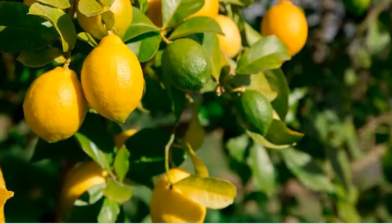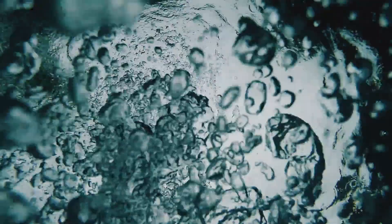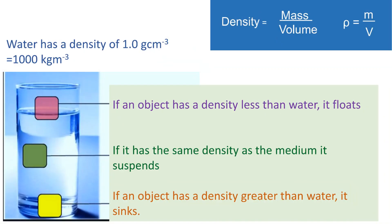We will explore more about lemons and limes in our interesting facts episode. For now, let's return to why one floats while the other sinks. As mentioned, it is all due to the difference in their density in relation to water. Whatever object you have, it will either float or sink in relation to the liquid it is introduced to — an object will float if it is less dense than the liquid, and it will sink if it is denser than the liquid.